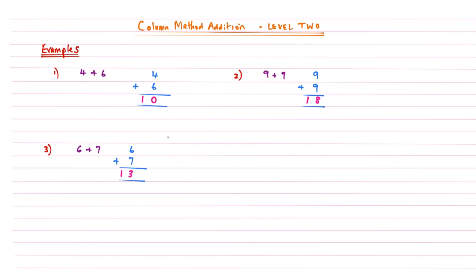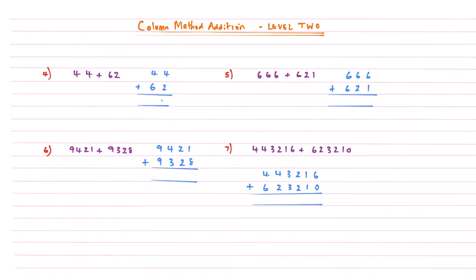Example four: we've been asked to add 44 and 62. As with Level 1, we start from the right-hand side and add each column separately. Starting with the right column: 4 plus 2 gives an answer of 6 — we write that as is because it's not 10 or above. Then the left column: 4 plus 6 gives an answer of 10, so we write the 1 underneath the invisible column and the 0 underneath the actual column. The answer to 44 plus 62 is 106.